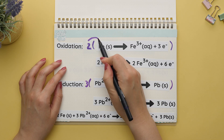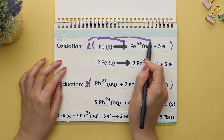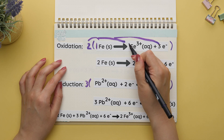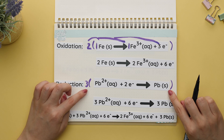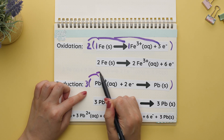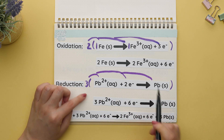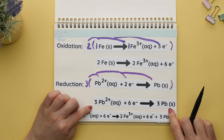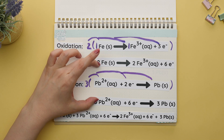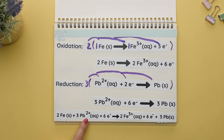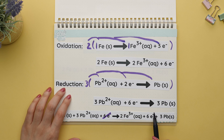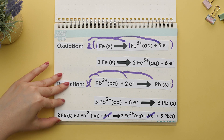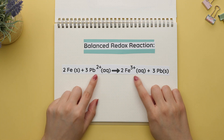We'll distribute the two to each coefficient — if there is no coefficient, assume it is one. This is our new half reaction for oxidation. Do the same thing for reduction: distribute the three to each coefficient. Here's our new half reaction for reduction. Add both half reactions together to get our balanced redox reaction. You'll know if you did this correctly if the electrons are the same, are on opposite sides, and cancel out. This is our balanced redox reaction.